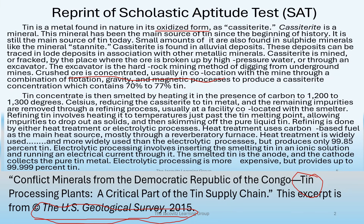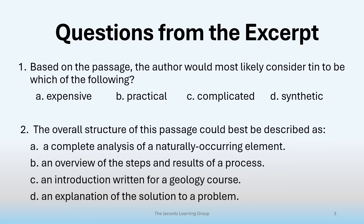We're going to preview two questions here without reading the next section. First: based on the article, this author would most likely consider tin to be which of the following — expensive, practical, complicated, or synthetic? Even though this is a preview, he hasn't mentioned how much it costs. He has talked about what it does, which is somewhat practical. He said it's in its natural form, oxidized — so 'synthetic' can be crossed off already.